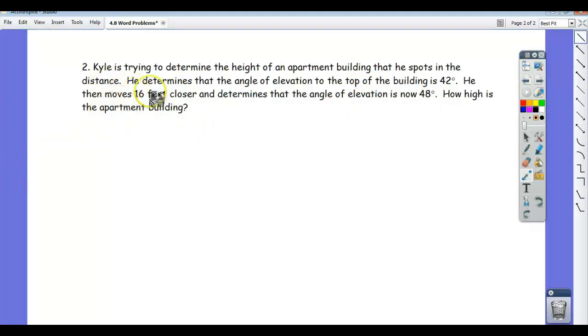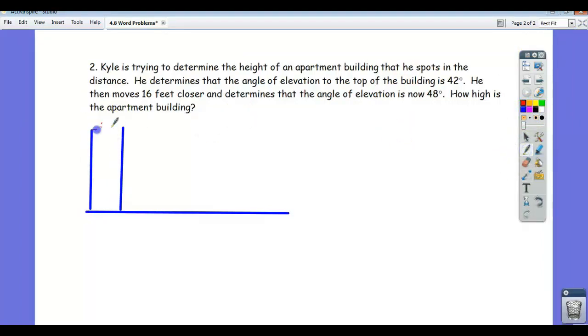It says that Kyle is trying to determine the height of an apartment building that he spots in the distance. So let's draw our apartment building. So there's the building and let's make the ground right here. Alright so here's his building and he's over here, we'll draw Kyle, Kyle is right here.